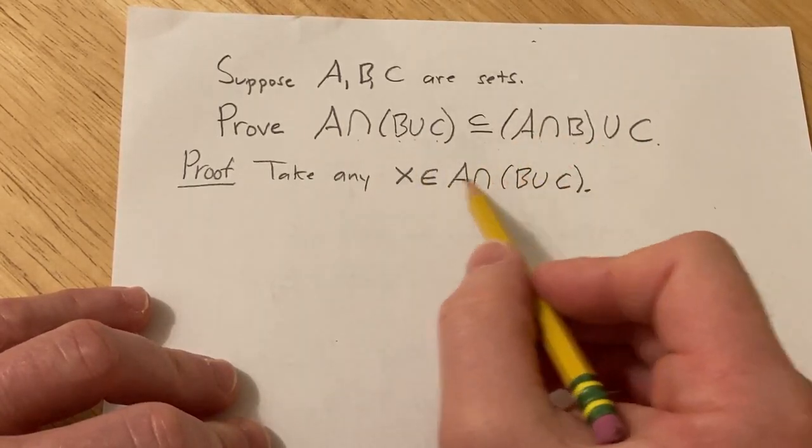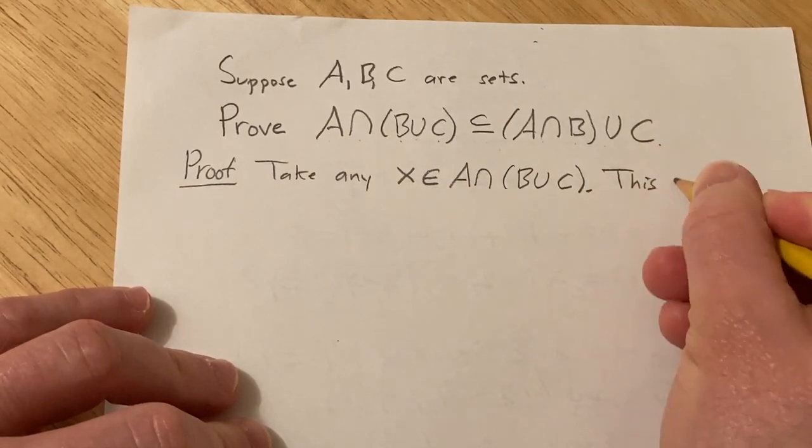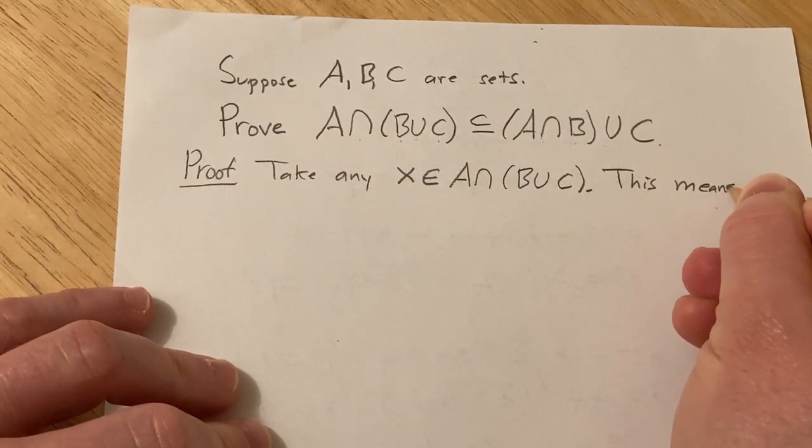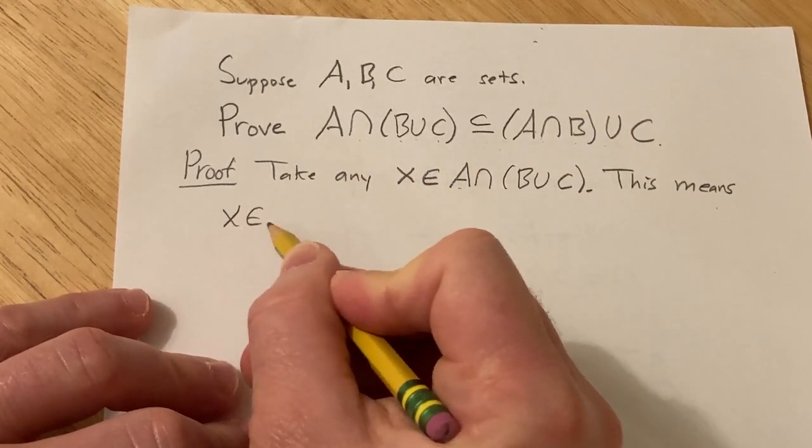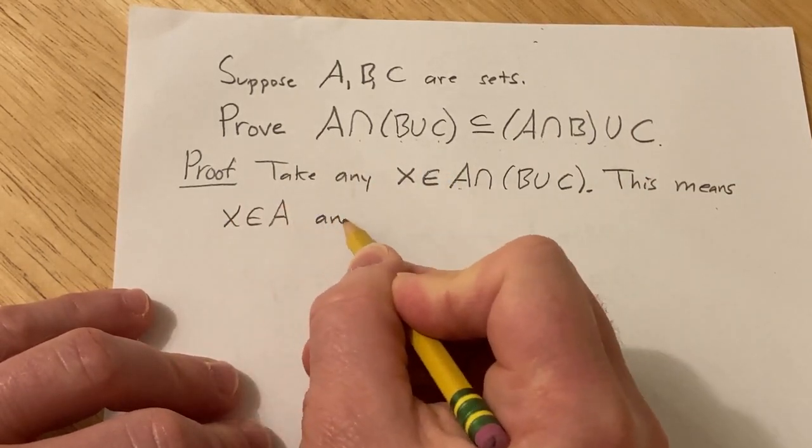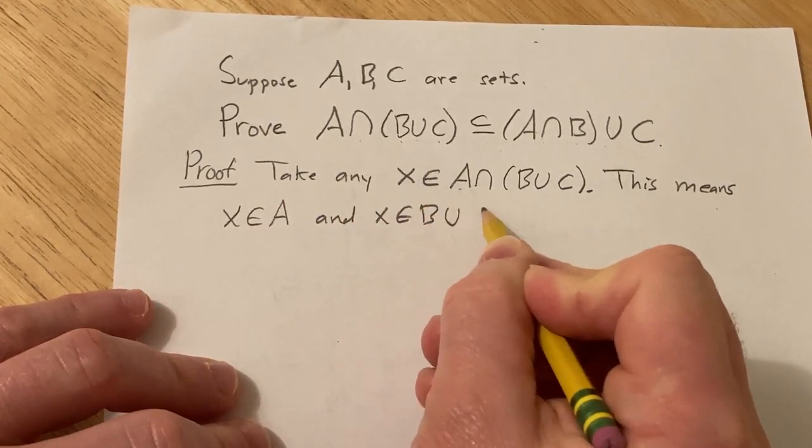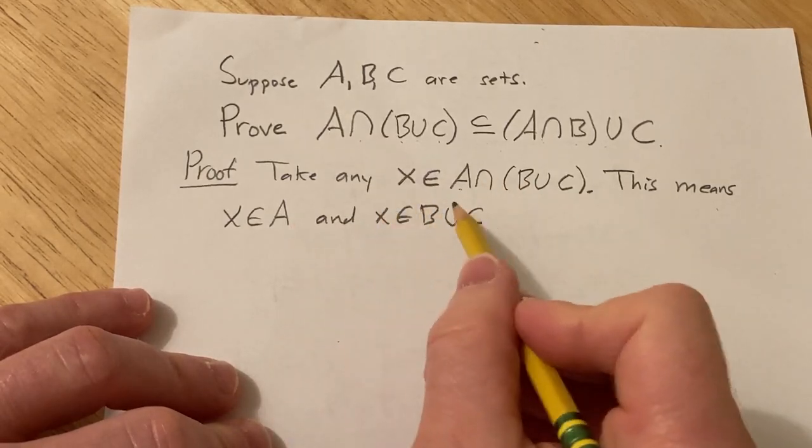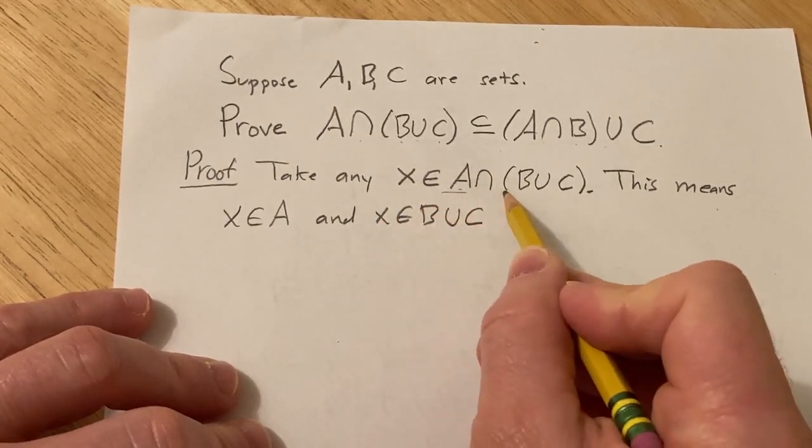So the natural thing to do now is to write down what this means. So this means it means that x is in the intersection, so that means that x is in A and x is in B union C. So that's what it means for x to be in the intersection of these two sets. It means it's in this set and it's in this set.